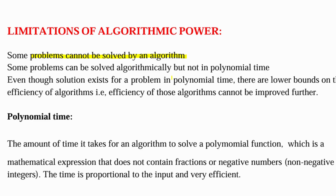Speaking of what polynomial time is, it is the amount of time taken for an algorithm to solve a polynomial function. For every algorithm we deduce, in the analysis part we deduce a recurrence relation, and that recurrence relation is a polynomial function. Most of them are polynomial functions. Solving the amount of time taken for an algorithm to solve such a function is called polynomial time. It does not contain any fraction or negative numbers. This time is proportional to the input and is very efficient.